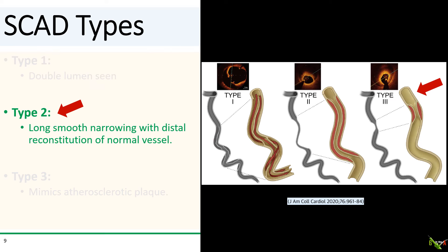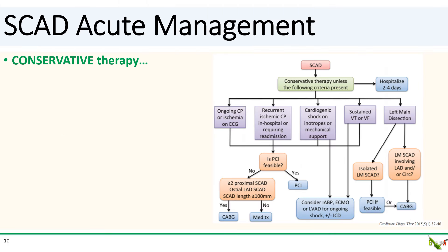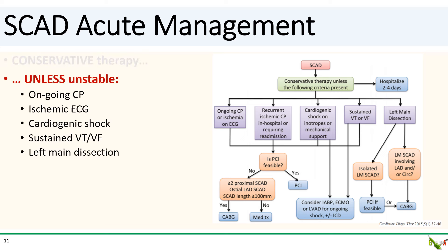Our patient's lesion looks most like type 2 SCAD — a long partial occlusion of the true lumen with no obvious intimal tear or dissection flap. SCAD almost always heals on its own, and revascularization is very challenging and fraught with risk, so for the vast majority of SCAD cases, management is conservative. Patients are generally hospitalized for a few days for monitoring and supportive care. The exception are unstable patients: ongoing chest pain, ischemic ECG, cardiogenic shock, salvos of sustained VT/VF, or left main involvement — in those cases, more aggressive revascularization should be considered.